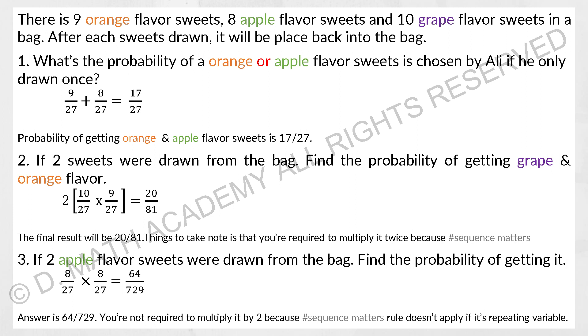For the next part, if two sweets were drawn from the bag, find the probability of getting grape and orange flavor. Since they didn't specify the arrangement of the sweets being drawn, there's actually two scenarios here which cover you. First drawn grape followed by orange, or you first drawn orange followed by grape. Hence there's a two bracket: 10 over 27 times 9 over 27, 64 over 729. For part 3, if two apple sweets were drawn from the bag, find the probability of getting it. So 8 over 27 times 8 over 27, and your final result will be 64 over 729.